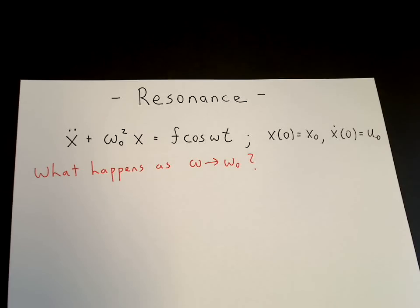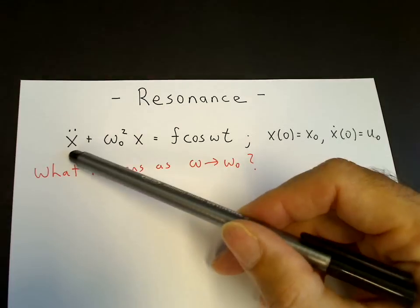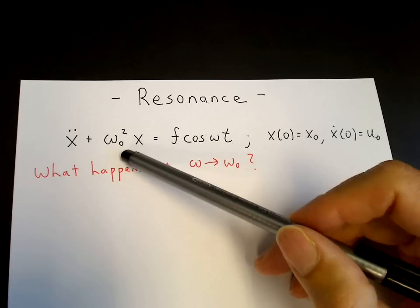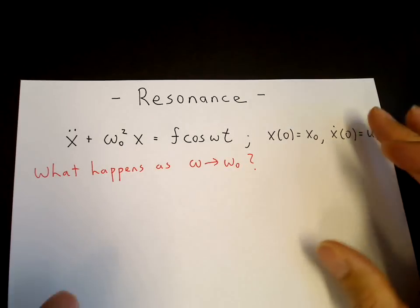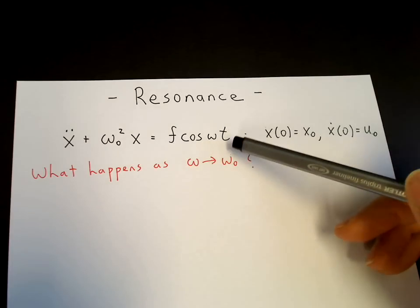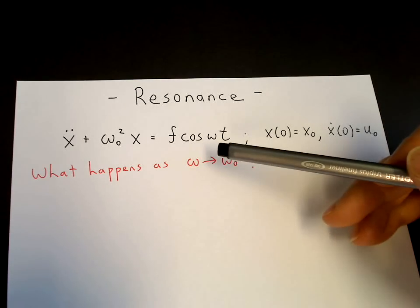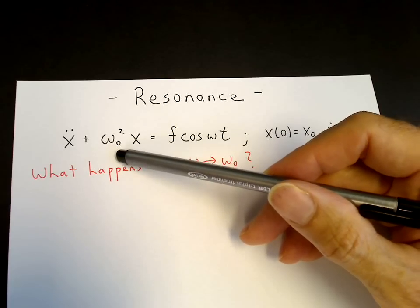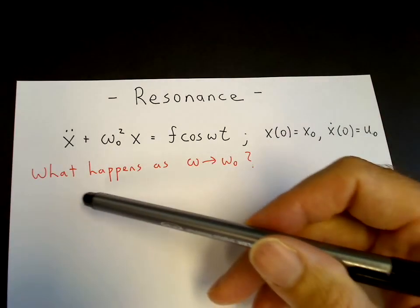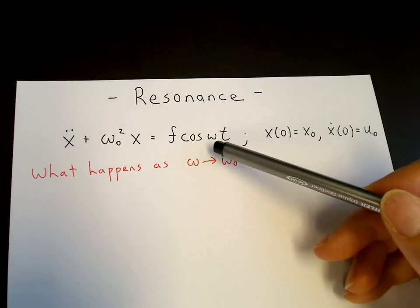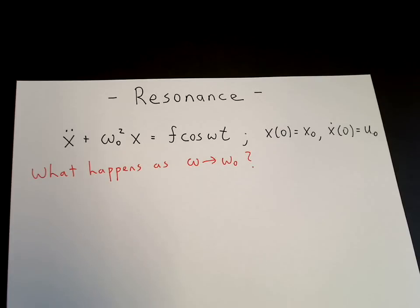In this video I want to discuss resonance. In mathematical terms, this is what happens when the inhomogeneous term becomes a solution of the homogeneous equation. In physical terms, we start with an equation for a simple harmonic oscillator, x double dot plus omega-naught squared x equals 0, and add a forcing term f cosine omega t. The frequency omega of the forcing term may be different than the natural frequency of the oscillator, and we want to ask what happens to the solution as the forcing frequency approaches the natural frequency.